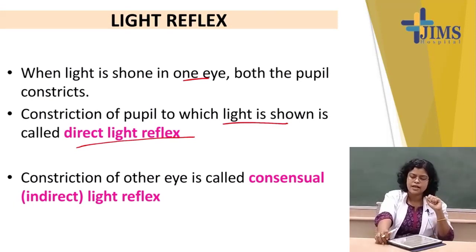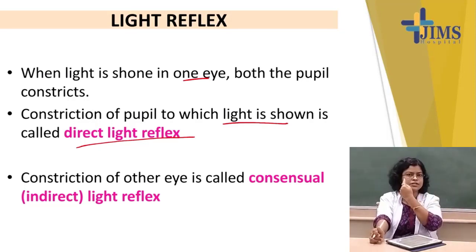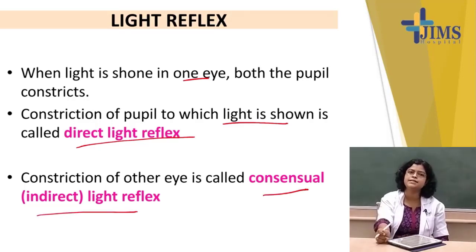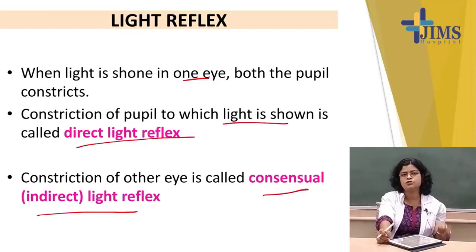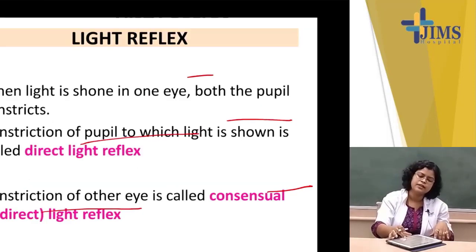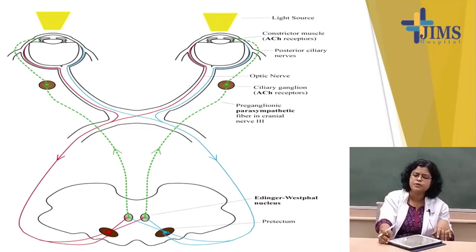Constriction of the other eye — I am putting the light here and there is constriction of the opposite eye — that is known as consensual or indirect light reflex. So light reflex has got two parts: direct light reflex and indirect or consensual light reflex. Now you have to know the pathway of this light reflex.